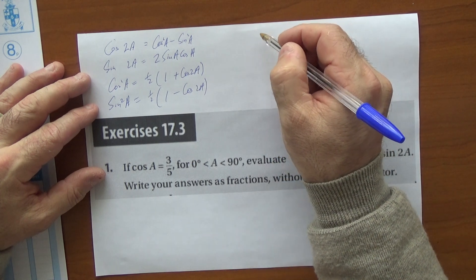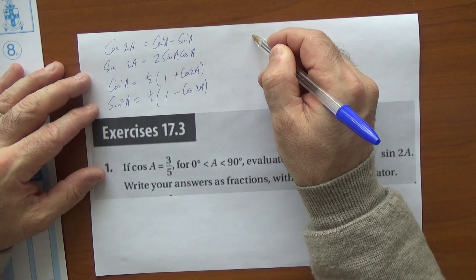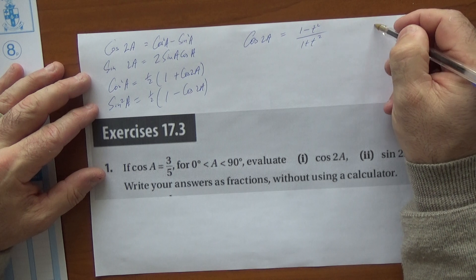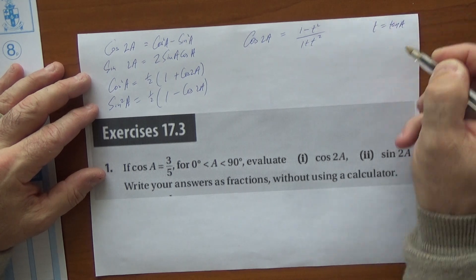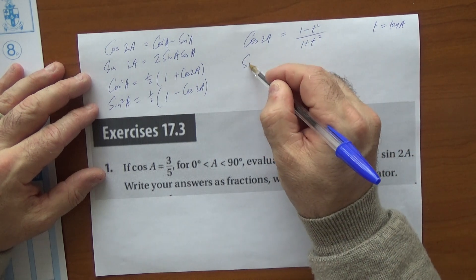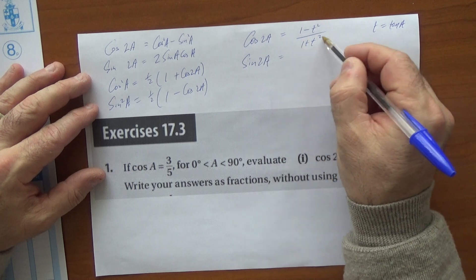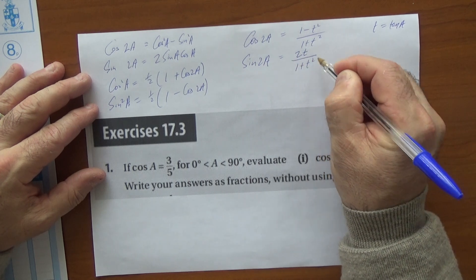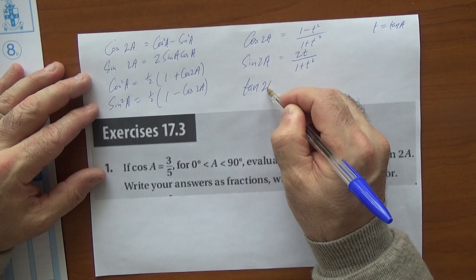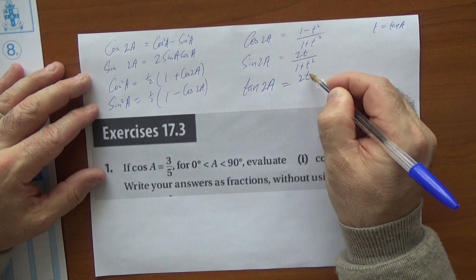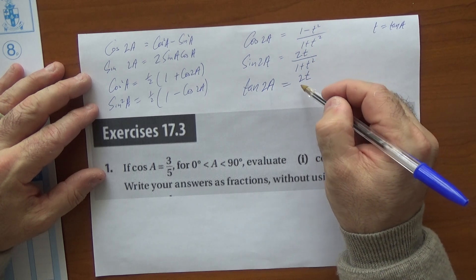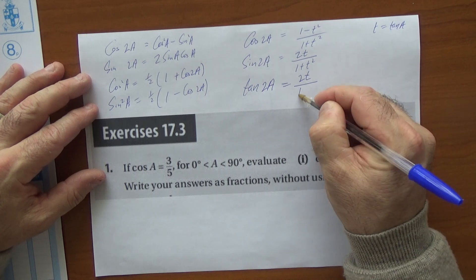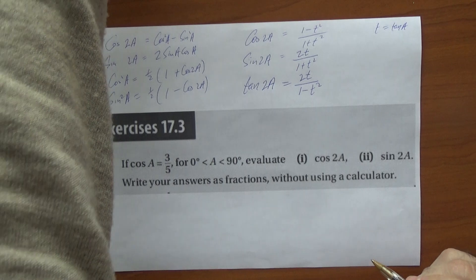For example, cos(2a) = (1 - t²)/(1 + t²) where t = tan(a). The cos and sine formulas share a common denominator. The sine version is 2t/(1 + t²). The tan of 2a has the top of cosine as its bottom, since tan is opposite over adjacent.